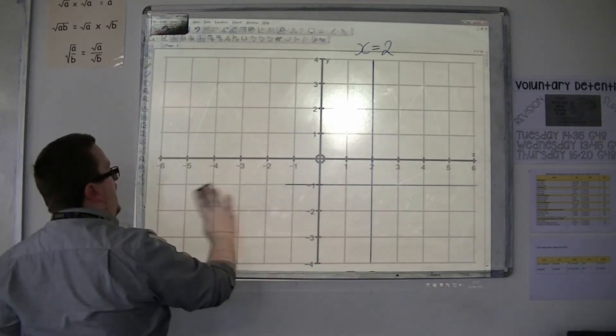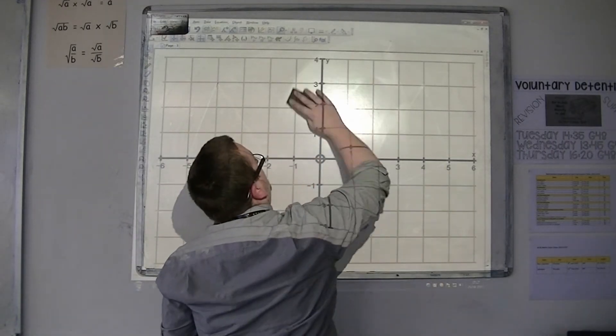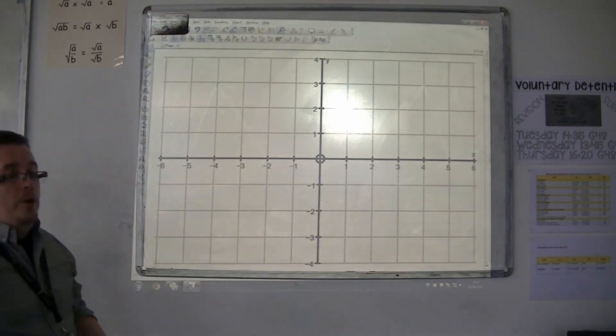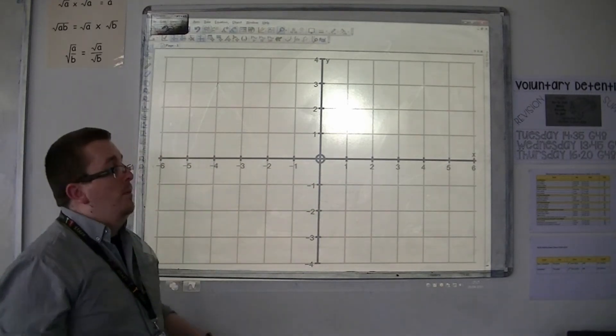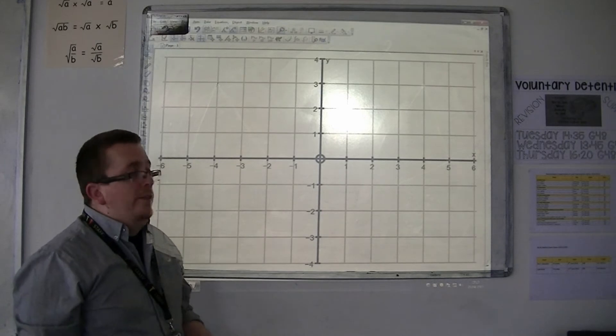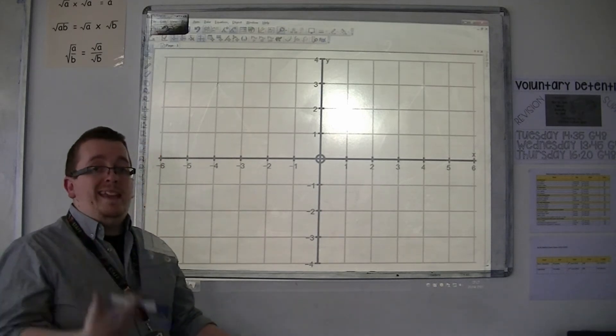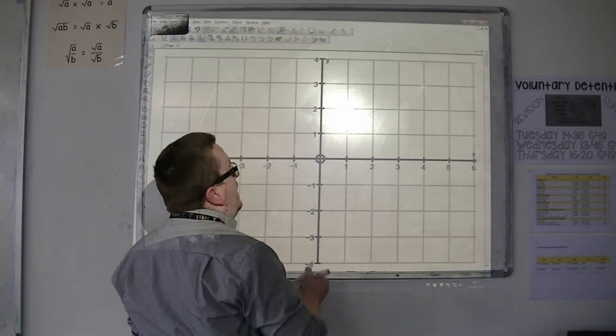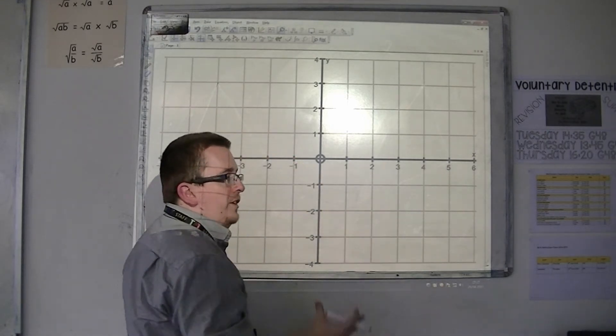Now, as I said, there were two others that would be very useful for you to know when we're doing reflections, because this is what we're really preparing for. The first is known as y equals x. Now, y equals x is when the x and y coordinate are the same.